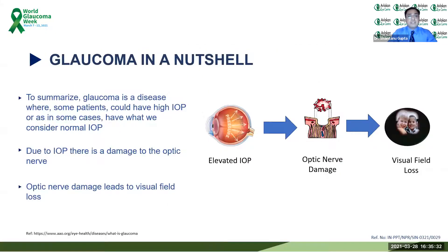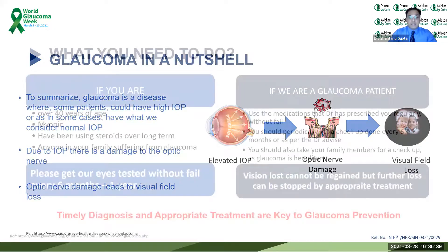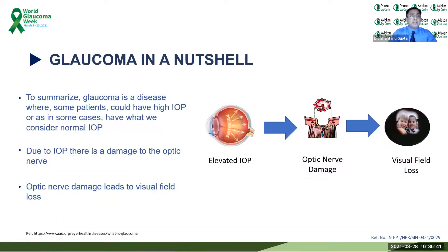To summarize: glaucoma is a disease where some patients could have high IOP, and in some cases we consider it as normal IOP — an entity known as normal tension glaucoma. Due to the IOP increase there is damage to the back of the eye or the optic nerve, which eventually leads to visual field loss.